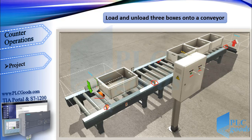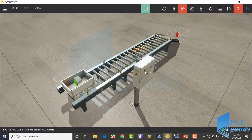When a box is placed on the first conveyor, it's moved to the buffer conveyor. With these sensors we can count boxes. Pay attention — when there isn't any box, these sensors send a positive signal to the PLC. When a box is placed in front of them, it cuts the path. After three boxes, the buffer conveyor moves them.